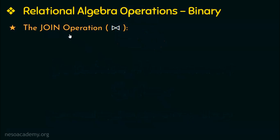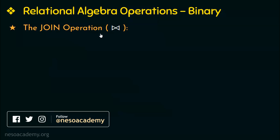First let us learn about the join operation, which is denoted by this symbol. The join operation combines tuples or rows from two relations into a single relation based on a given join condition. This operation is very important when we have more than one relation and we want data from more than one relation.